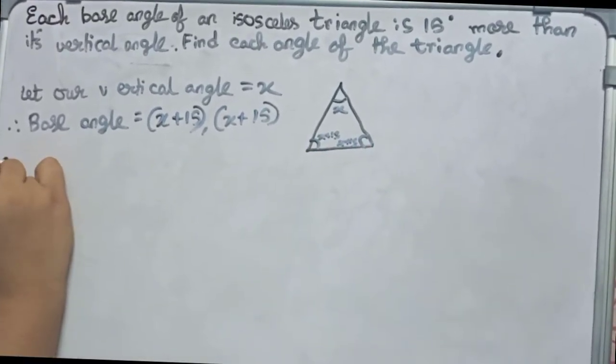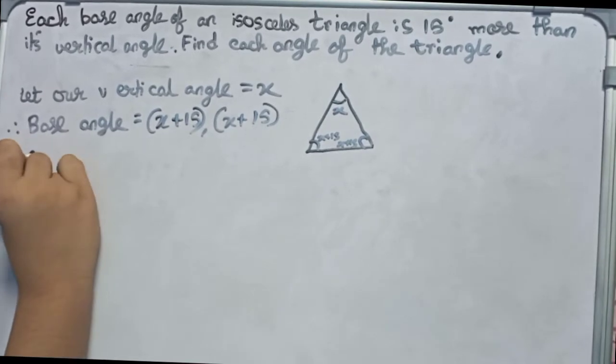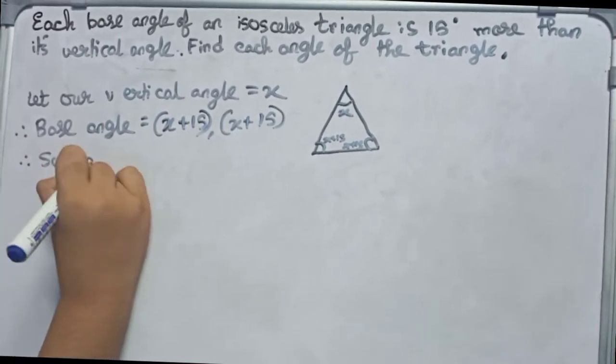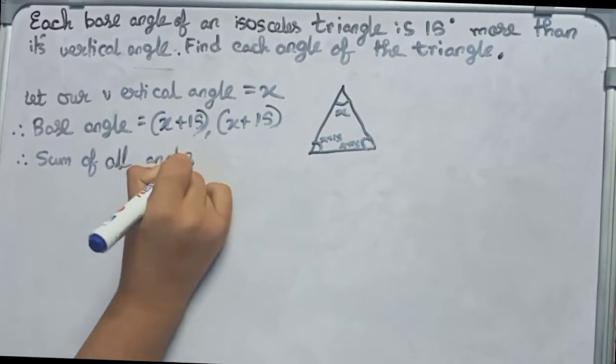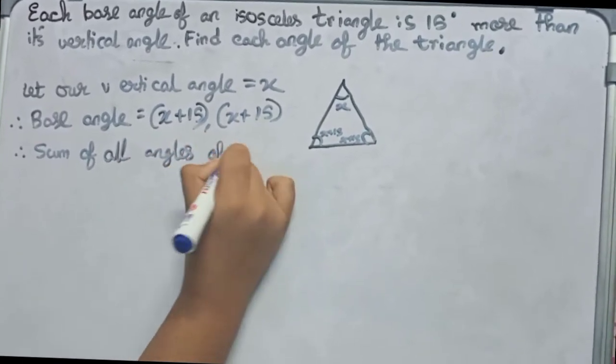So now we write: therefore, sum of all angles of a triangle is always 180 degrees.